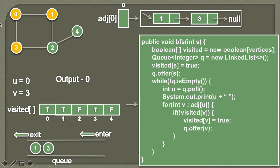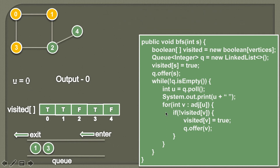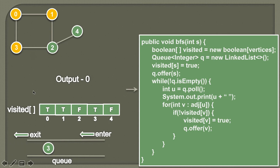As we have visited all adjacent nodes of zero, the for loop terminates. We come back to the while loop and check whether the queue is empty. The queue is not empty, so we pull the first element, which is one.